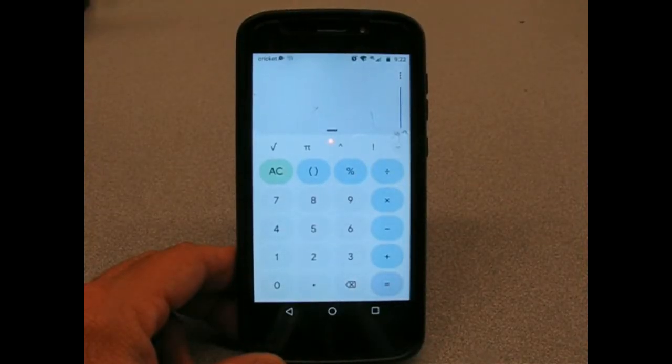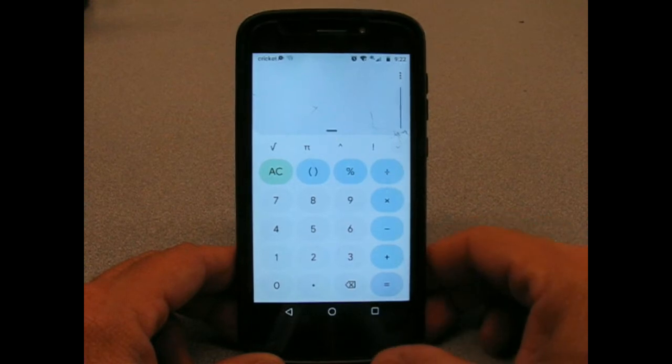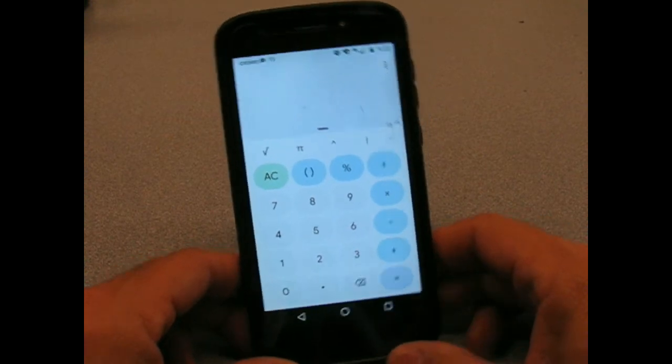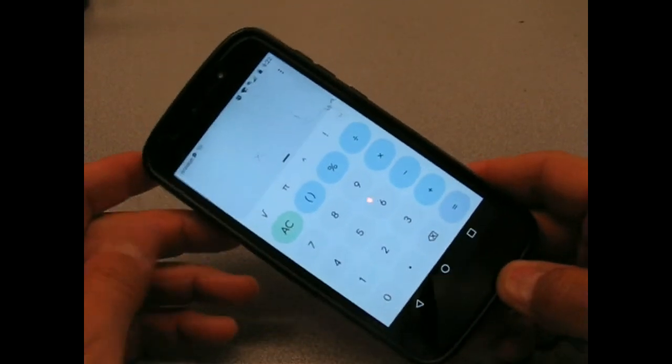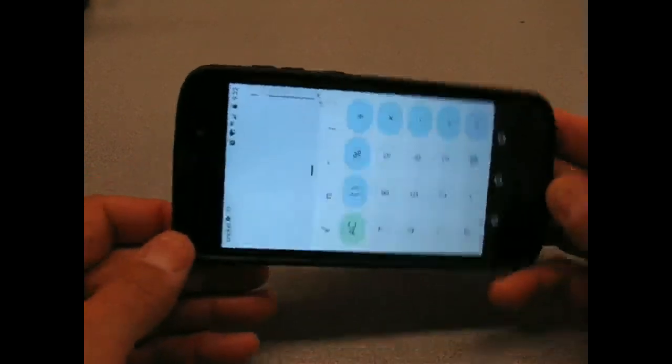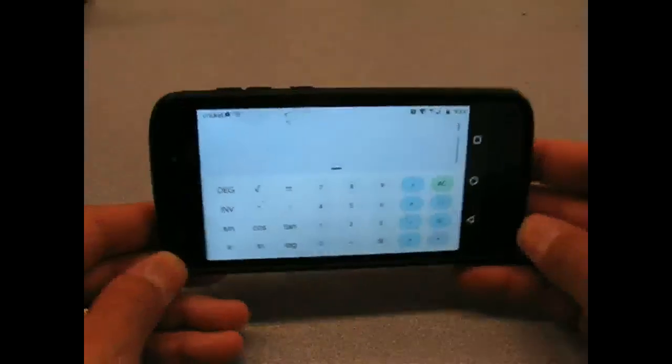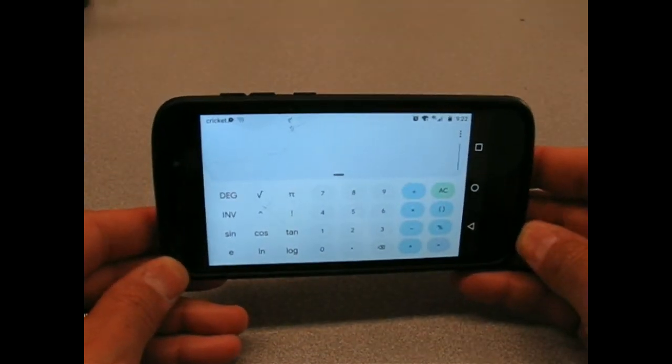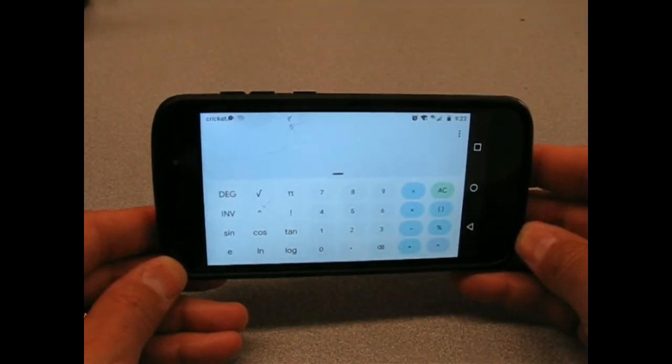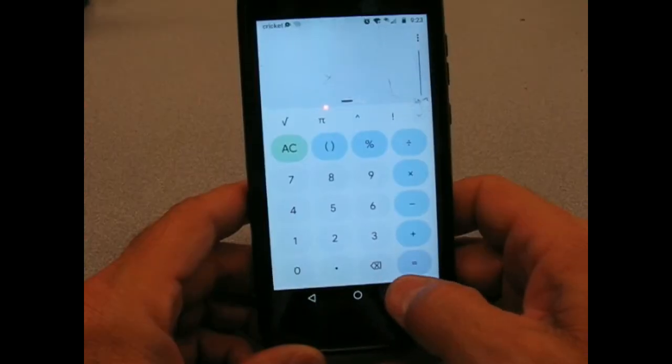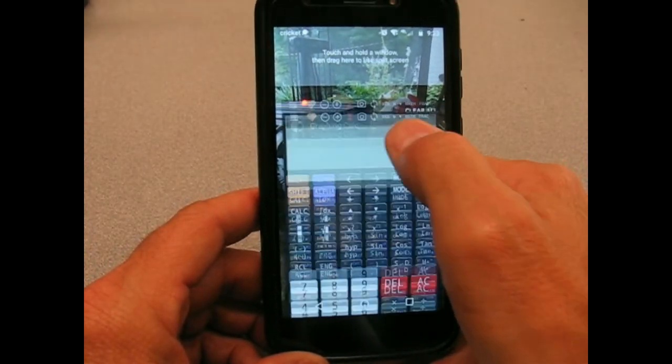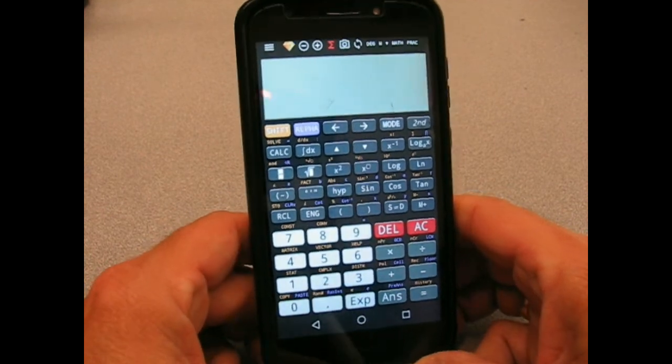Your phone probably already has a calculator, and so does your computer. You'll want to make sure that whichever calculator you use has the ability to use parentheses and can do exponents and square roots. If your phone calculator does not have those functions, try flipping it on its side to see if that gives you more options. You can also download other calculator apps, often for free, which have the extra features.